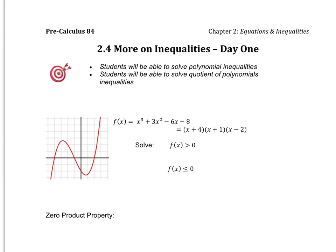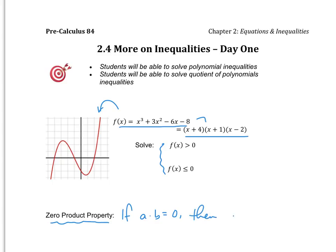We open up here with an example in which we've got our f of x — it's a trinomial. Notice that I have it graphed for us. We're going to use that to help us determine where it is greater than 0 or less than or equal to 0. It is also given in factored form. Remember that the zero product property says that if a times b equals 0, then either a equals 0 or b equals 0.